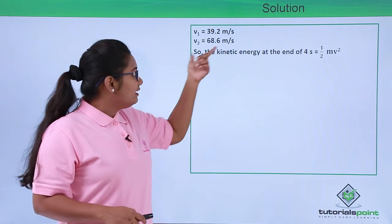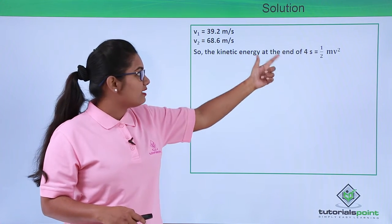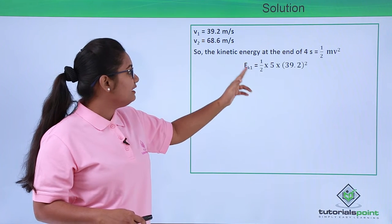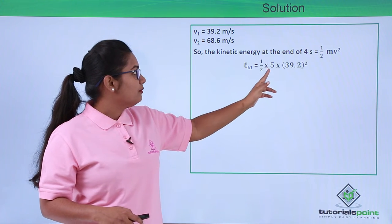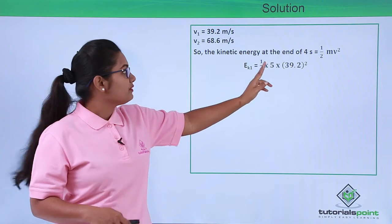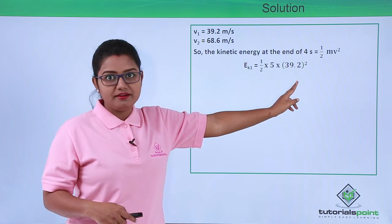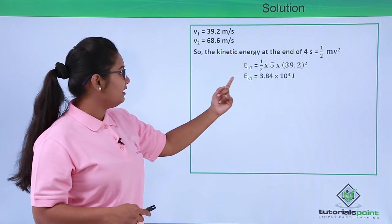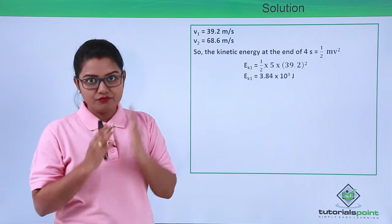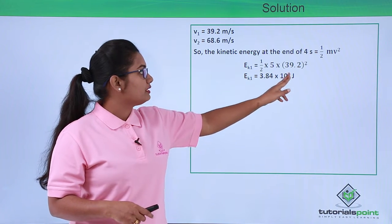The kinetic energy of the body at the end of 4 seconds is given by half mv squared. Putting in the values, Ek1 equals half multiplied by 5 kg multiplied by 39.2 squared. At the end we get Ek1, the kinetic energy at the end of 4 seconds, to be 3.84 × 10³ joules.